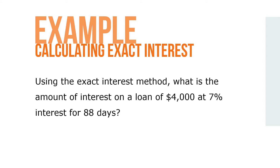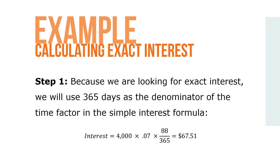Using the exact interest method, what is the amount of interest on a loan of $4,000 at 7% interest for 88 days? Because we're looking for exact interest, we'll use 365 days as the denominator of the time factor in the simple interest formula. So interest equals 4,000 times 0.07 times 88 over 365, to give us a total amount of interest of $67.51.